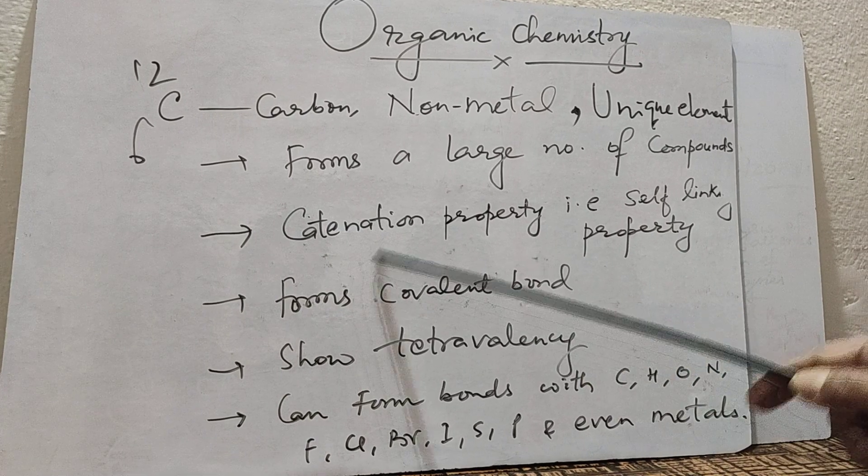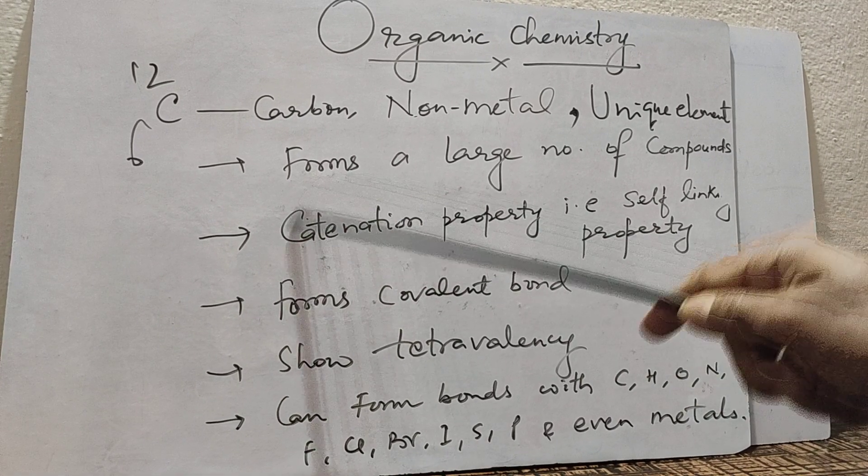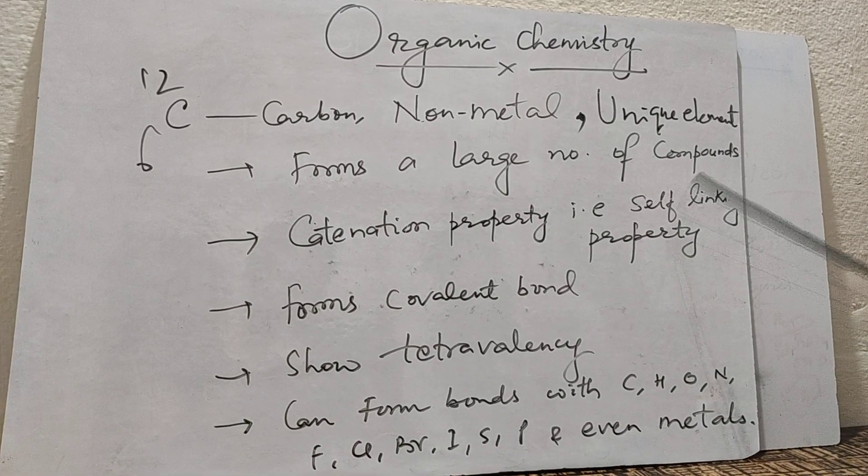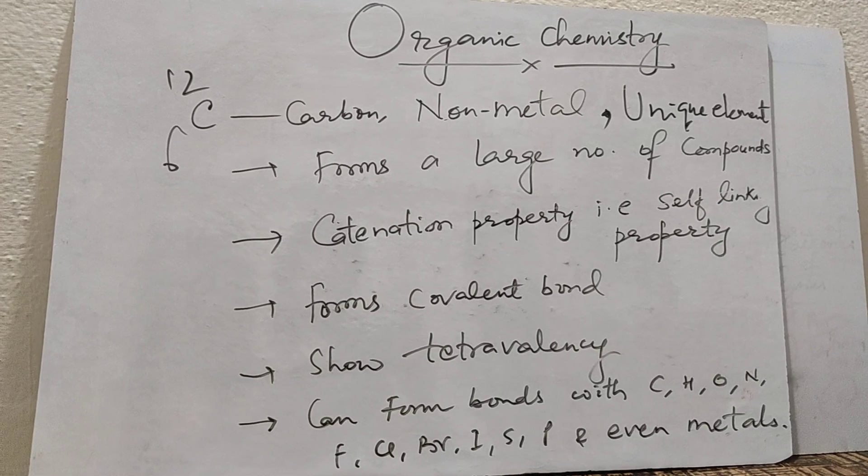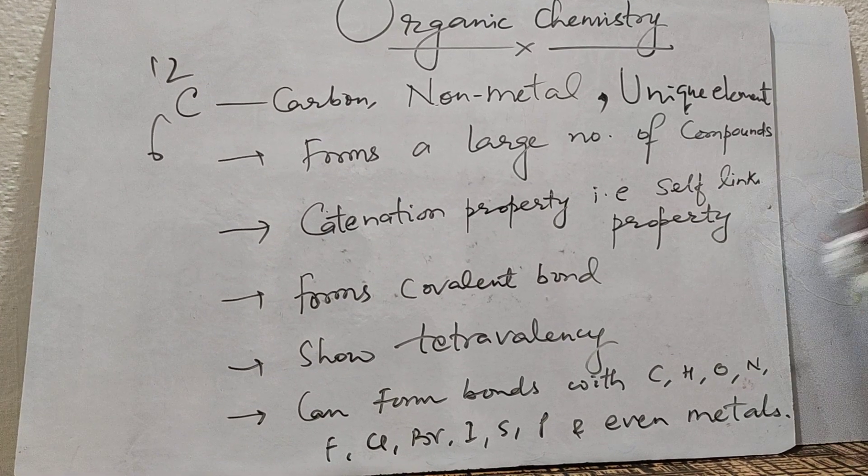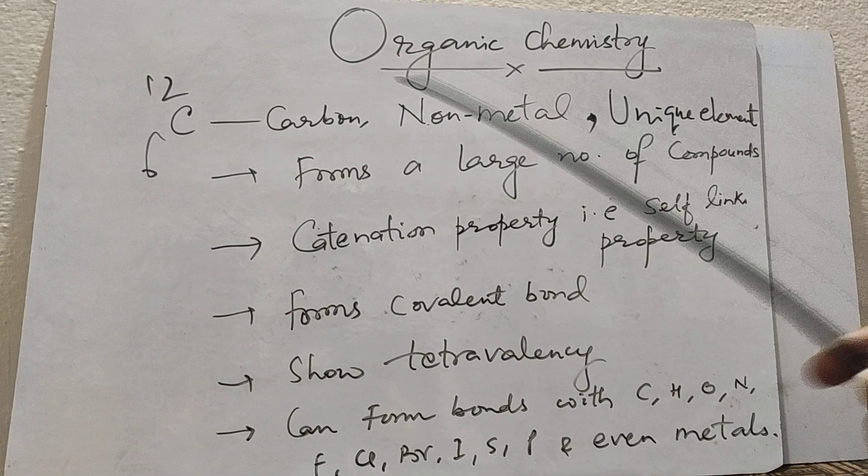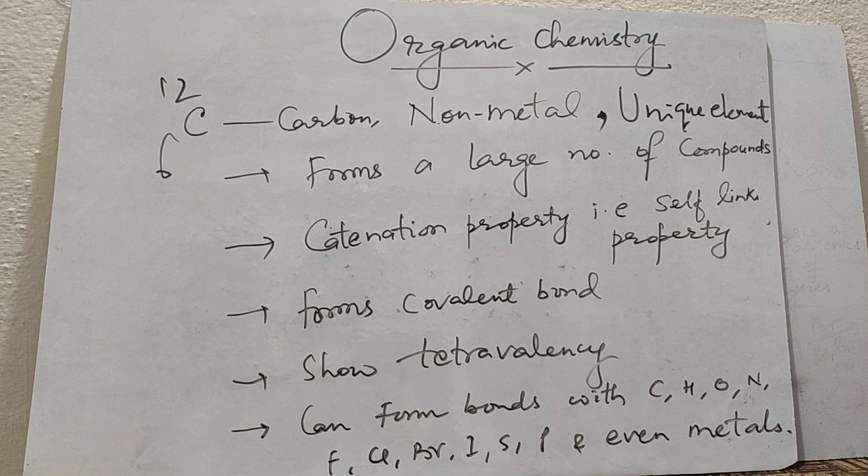One of the unique properties of carbon is catenation. This catenation property is called self-linking property - the ability of carbon to bond with itself.